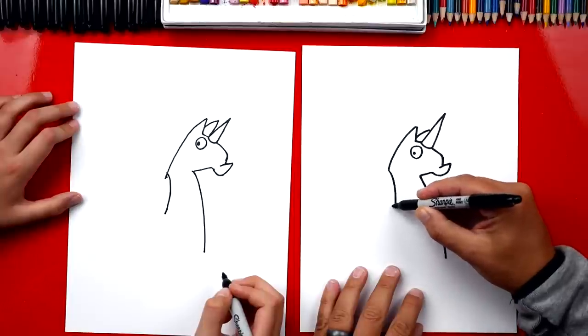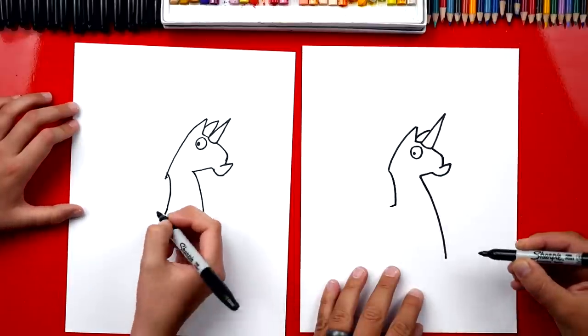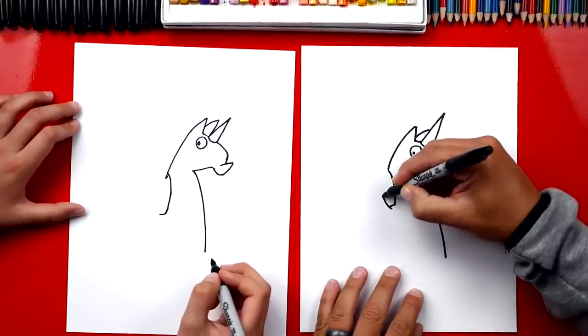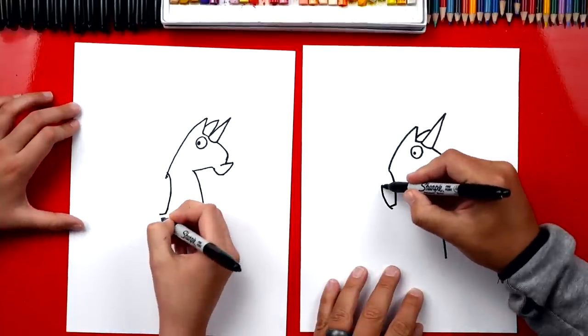Next we're gonna draw his back and it's just a short line first because then he has a wing. Yeah, we're gonna draw a curve that comes up close to the back of his head.